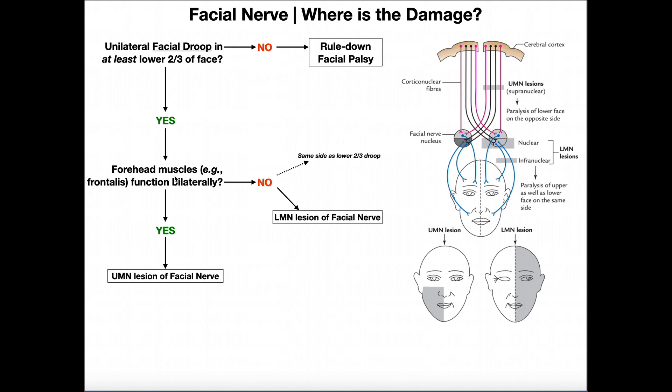The forehead muscles are the frontalis muscles — we have a left frontalis and a right — and the action of those muscles is to elevate the eyebrows and wrinkle the forehead. Do both those muscles function bilaterally to the same extent? If both forehead muscles are functioning — the left and right frontalis muscles have equal strength — then you're more likely having an upper motor neuron lesion of the facial nerve.